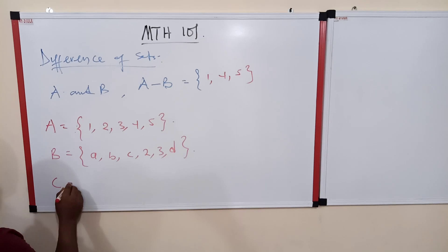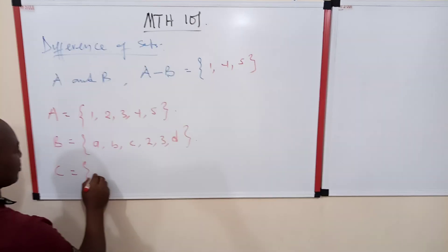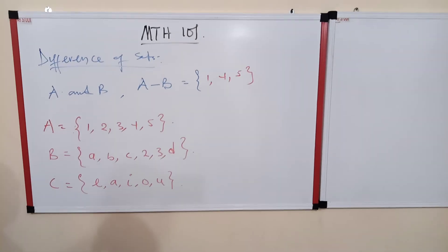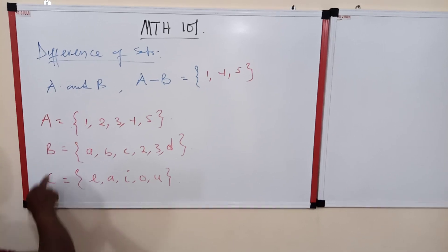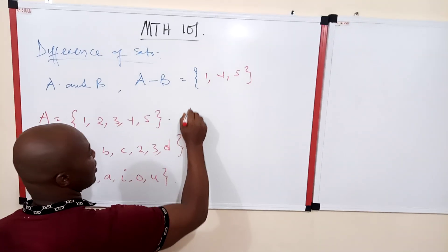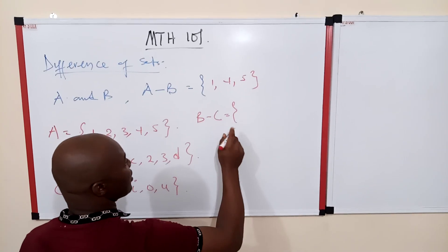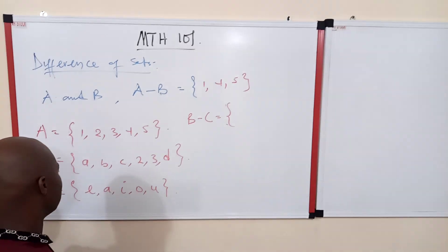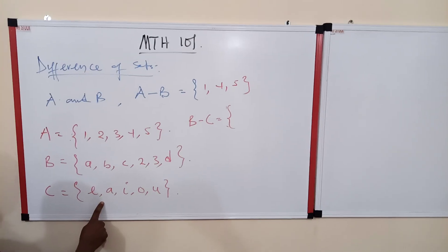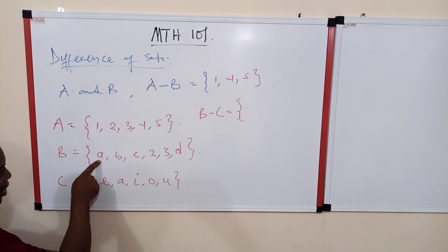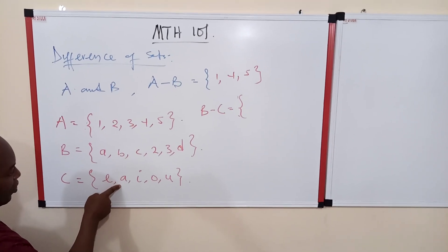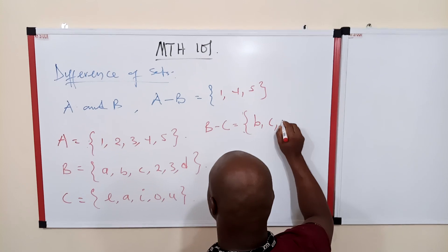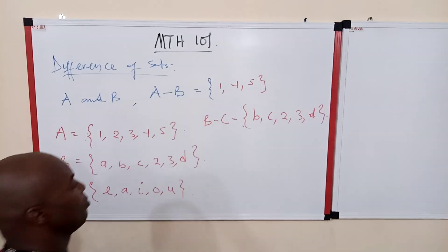Let's consider another set C where the elements are {E, A, I, O, U}. We can also consider the difference between B and C, that is B minus C. It is a new set that contains all the elements that are in B but not in C. Between these two sets, the only element in common is A. So B minus C gives us {B, C, 2, 3, D}.